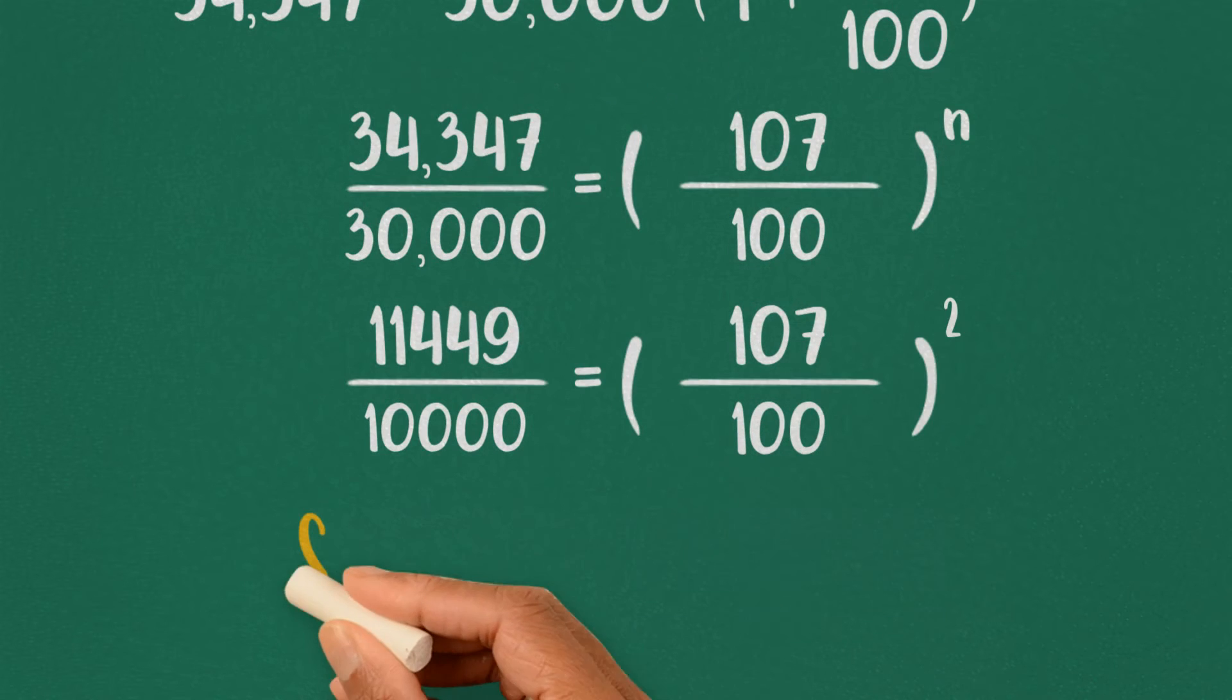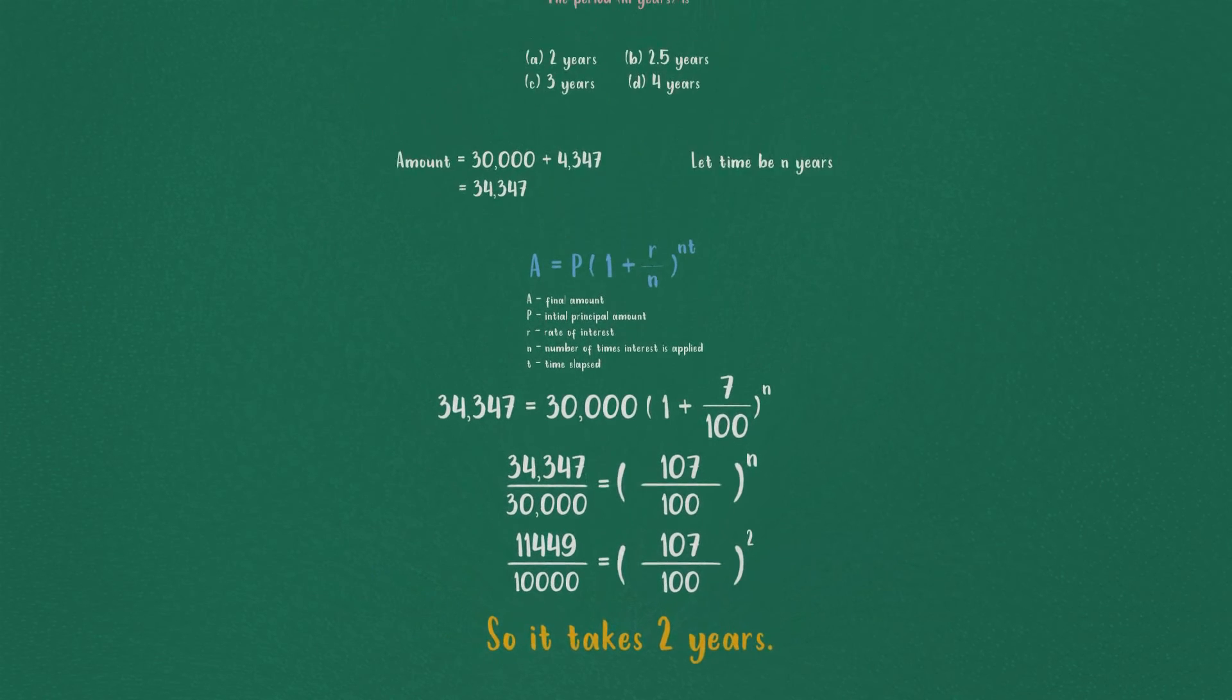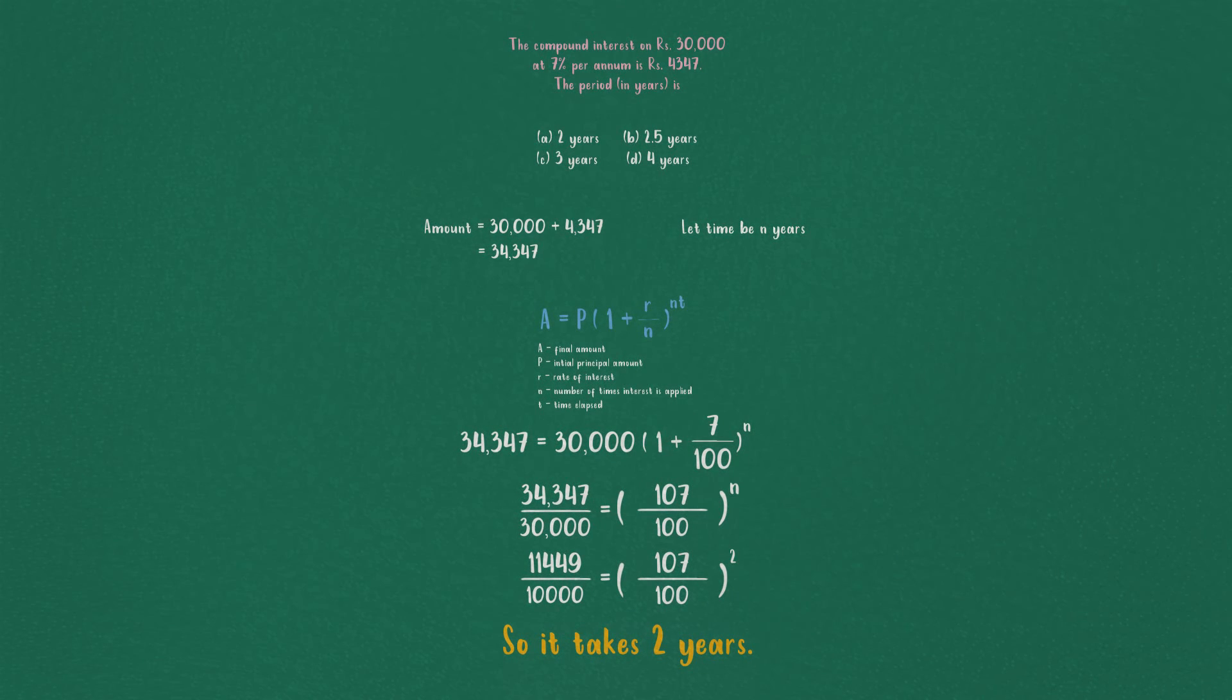So, we get the value of N to be 2. It takes 2 years for an interest of 4,347 to be produced from the initial amount 30,000.